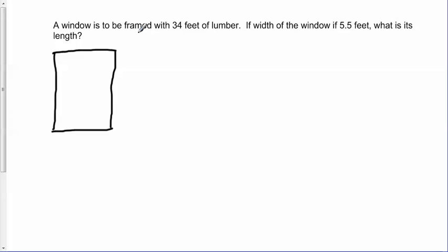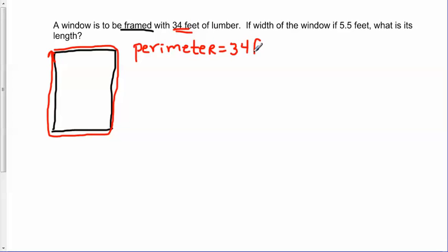They're telling me that it's going to be framed with 34 feet of lumber. And if we think about what that means to frame a window, it's like framing a picture - that's the part that goes around the edges, around the rim of the window. So when we talk about that distance around the outside of any geometric figure, that's the idea of talking about the perimeter. So I'm just going to jot that down so we know what we're looking for here. We know that the perimeter is going to use 34 feet of lumber, so we can presume that the perimeter is going to be 34 feet.